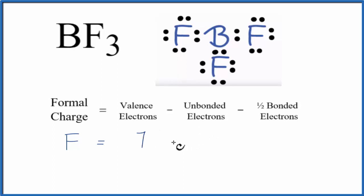We'll subtract from that the unbonded valence electrons. So these, these, and these, they're not involved in chemical bonds. So we have 2, 4, 6 of those, and then we'll subtract the bonded valence electrons, half of them. So we have 2 between the F and the B, those are involved in a chemical bond, so 2 divided by 2, that gives us 7 minus 6 minus 1, 0. And that's the formal charge on the fluorine here in BF3.